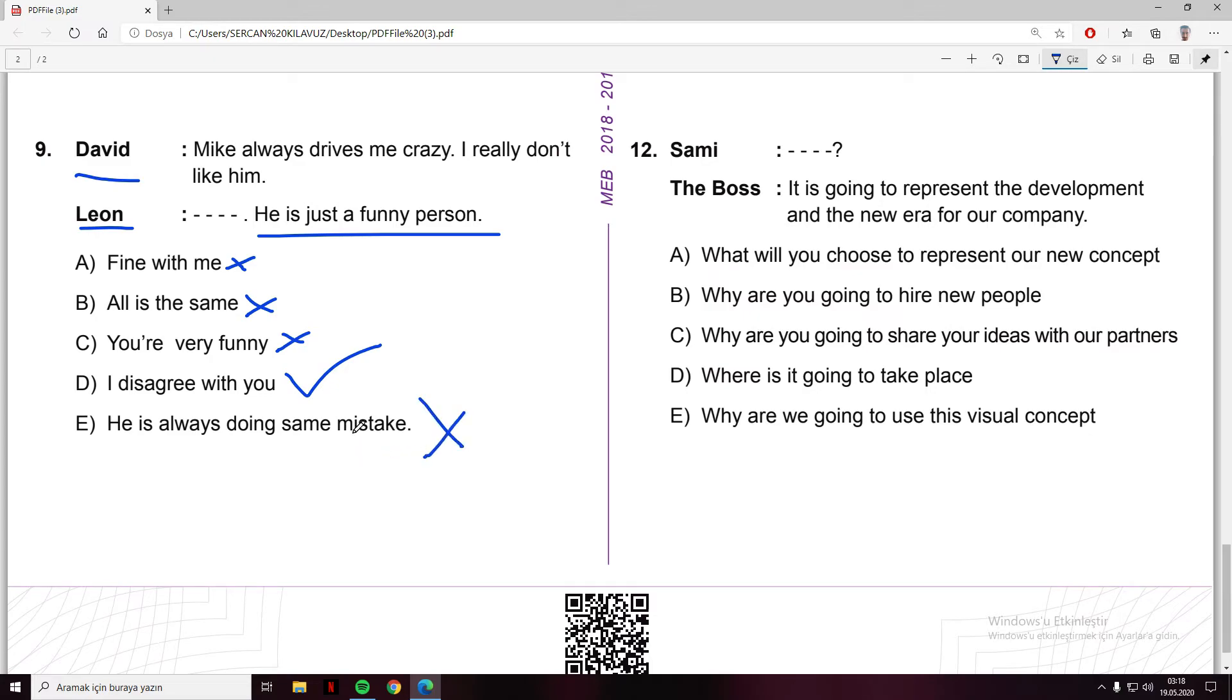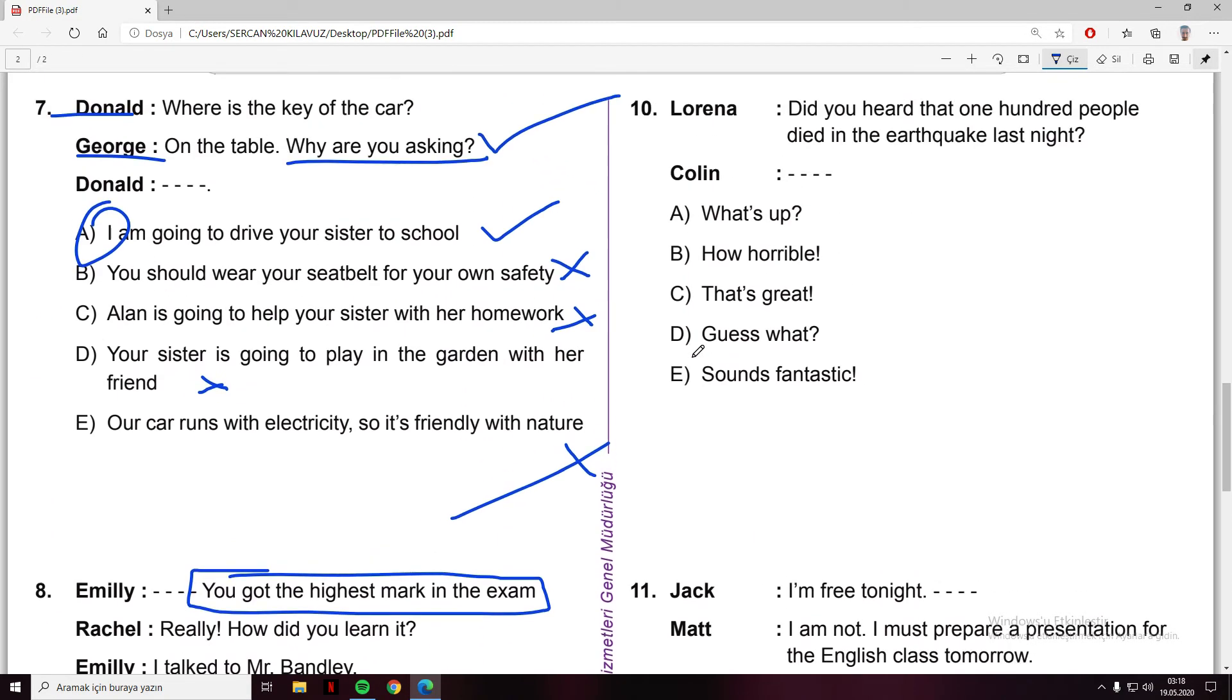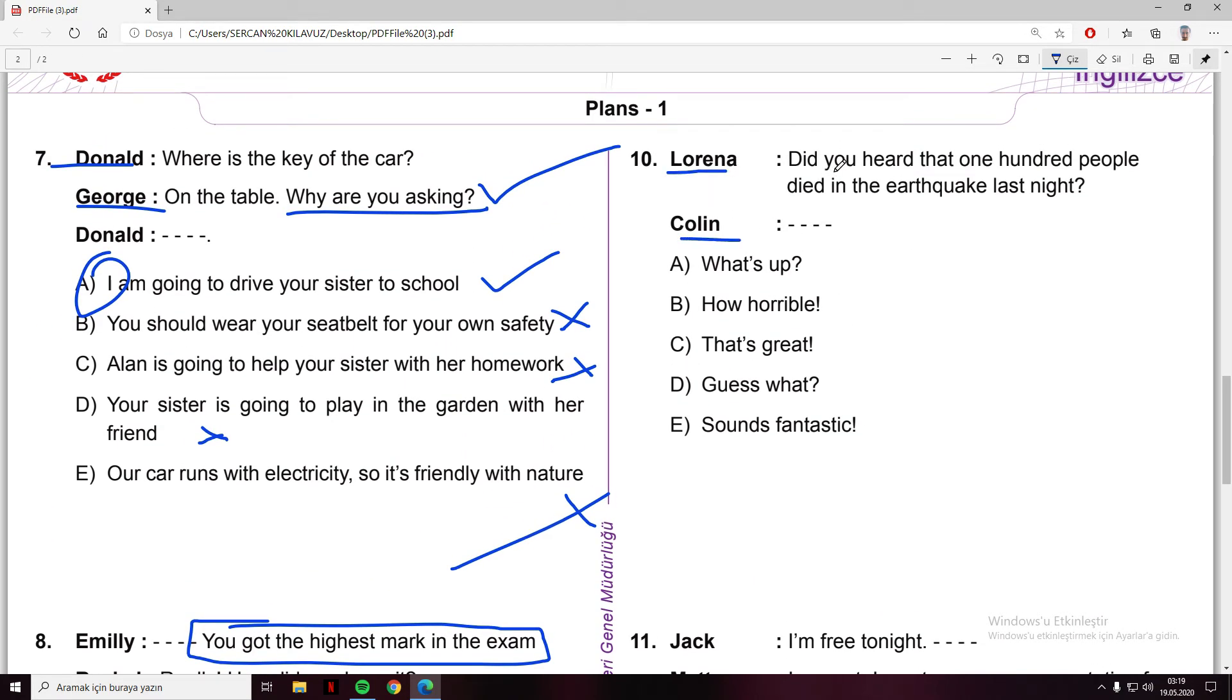Lorena and Colin: did you hear that 100 people died in the earthquake last night? Oh, what a terrible situation. What's up - no. How horrible - yes. Really, 100 people died in the earthquake last night, you have to say how horrible. That's great - no, people died, how can it be? Guess what - no. Sounds fantastic - no. The answer is how horrible.